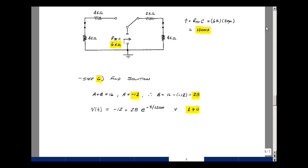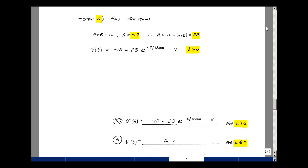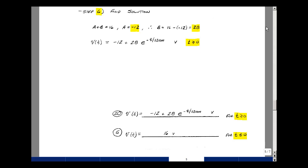And so now we can put together our complete solution. t greater than or equal to zero, we had this expression, minus 12 plus 28 e to the minus t over 120 milliseconds, and the units here would be volts. And then for t less than or equal to zero, we found that the voltage across the capacitor was 16 volts.